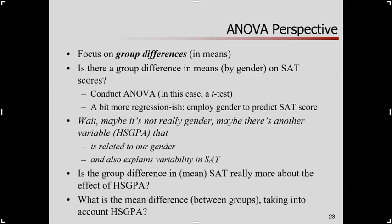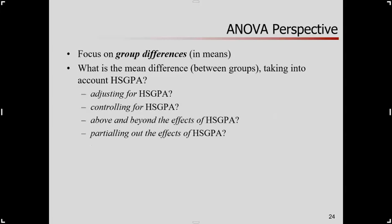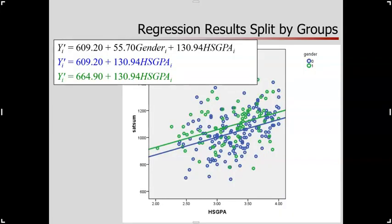So what is the mean difference between our groups taking into account this other variable, high school GPA? The focus is on group differences — we want to ask, what is the mean difference between the groups taking into account this other variable? Here's the picture for that. This is a difference between groups, captured by the vertical distance here, but it recognizes that there's another predictor. This conveys a difference between groups on average, understanding that there's another variable that is also related to the outcome.